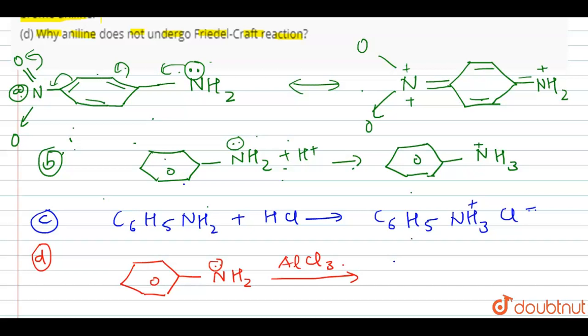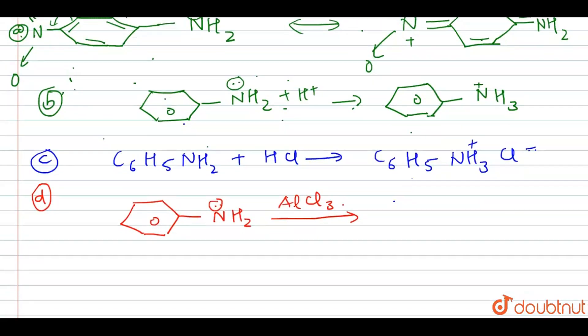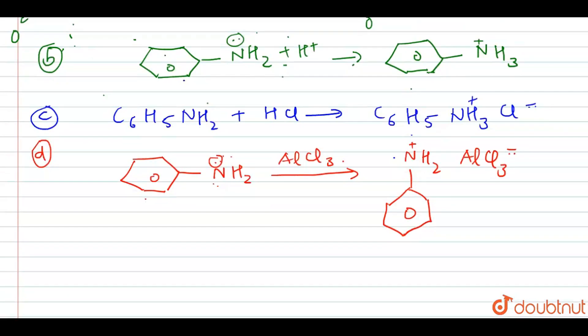When it interacts with the Lewis acid AlCl3, it interacts with nitrogen's lone pair to take away the lone pair and form the product.